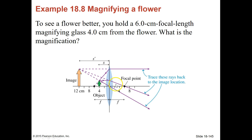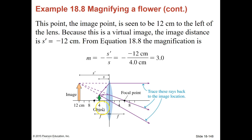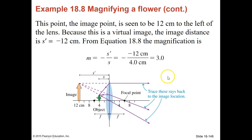This is the last example: to see a flower better, we hold a six-centimeter focal length magnifying glass four centimeters from the flower. They want to know what the magnification is. The flower is in the object plane — we use ray tracing to locate the image, and from measuring the image we can find the height and the magnification. We're going to use DI and DO. Our S prime is 12 centimeters, that's the image distance to the lens, and S is our object distance. If you divide the two, we get negative 12, and because the image is on the same side, that's a negative distance. We divide that by four and we end up with positive three, which means it's upright and magnified by three times.